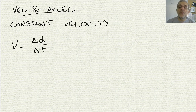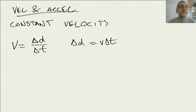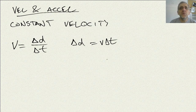We have this equation for constant velocity, and we can rearrange it, solving for delta d. We multiply both sides by delta t and get v times delta t. In physics, t is always assumed to be delta t — we never deal with time of day. So if we rewrite this equation, d equals vt.